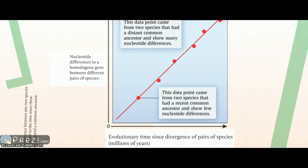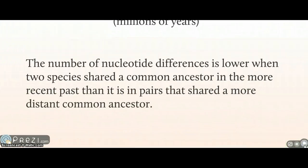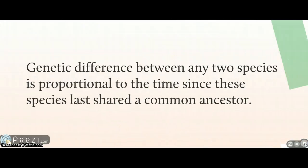As you can see from this graph, since it's a determined rate, the line is linear. The number of nucleotide differences is lower when two species shared a common ancestor in the more recent past than in pairs that shared a more distant common ancestor. Genetic difference between any two species is proportional to the time since they last shared a common ancestor. For example, if a species diverged three million years ago at a rate of one mutation per million years, there will be three mutations between the two homologous genes; if it diverged only a million years ago, there will be just one nucleotide mutation.